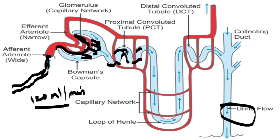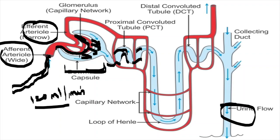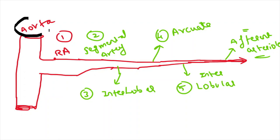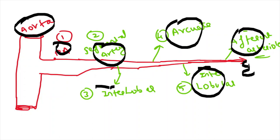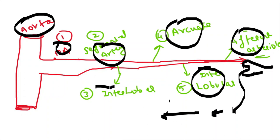With respect to the nephron parts: afferent arteriole, efferent arteriole, glomerulus, Bowman's capsule, proximal convoluted tubule, loop of Henle, distal convoluted tubule, and collecting duct into the urinary flow. From the aorta: main renal artery, segmental artery, interlobar artery, arcuate artery, interlobular artery, then the glomerulus. Once the glomerulus is reached, then afferent artery forms the vasa recta. The drainage is similar: interlobular vein, arcuate vein, interlobar vein, segmental vein, main renal vein into the IVC. This vasculature is important because renal artery stenosis is common, and from MCQ perspective the branching of the renal artery is key.